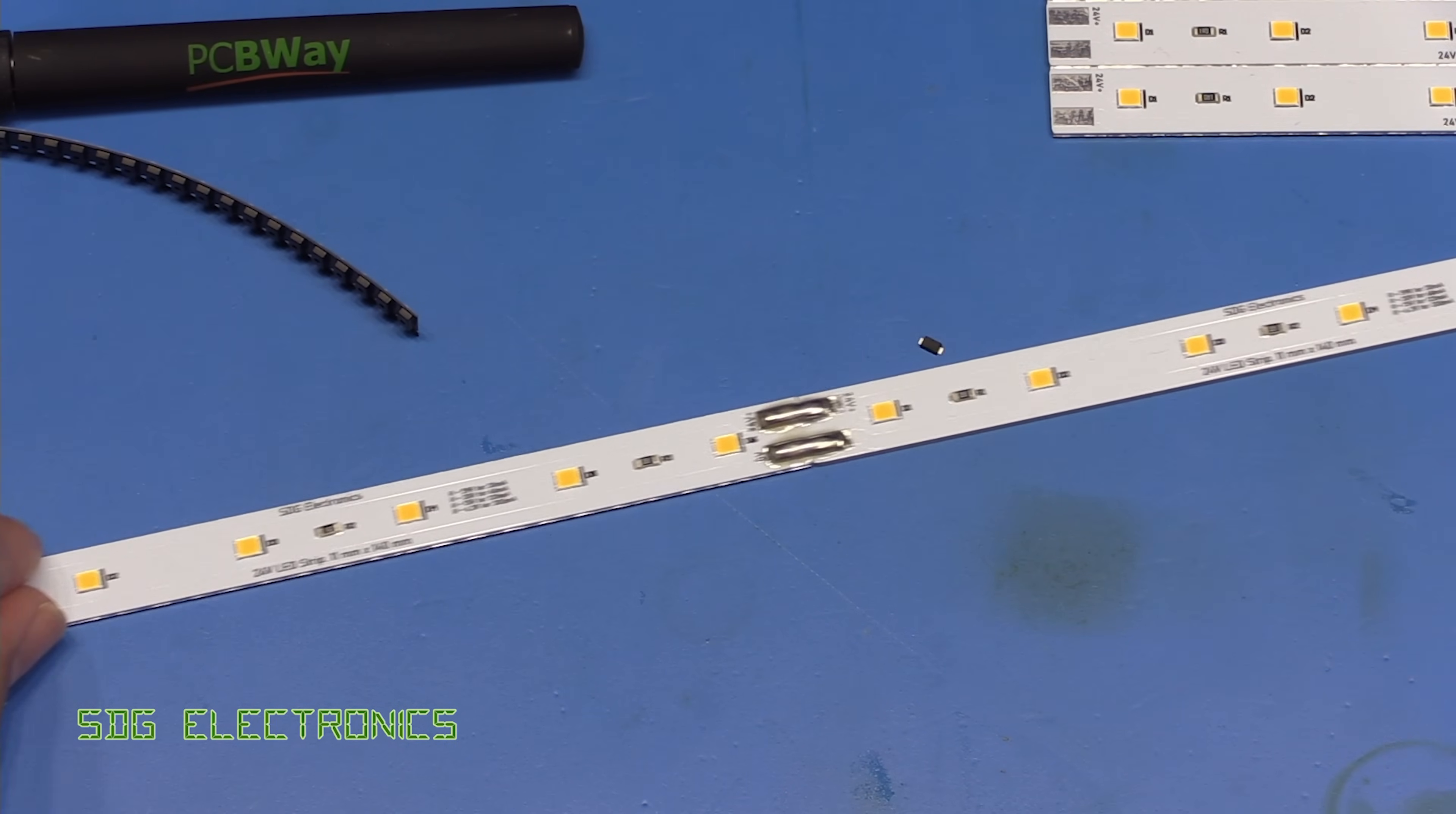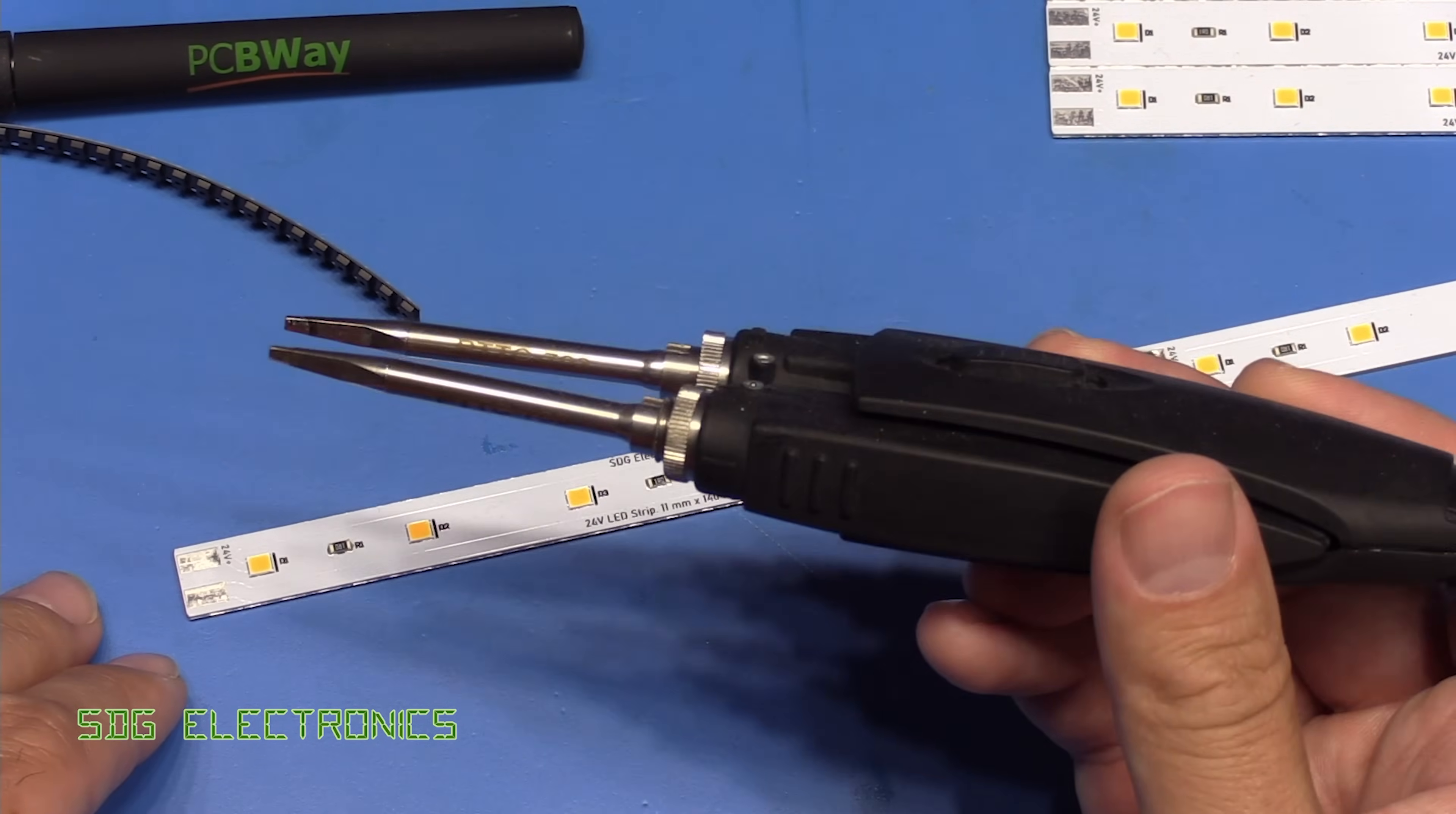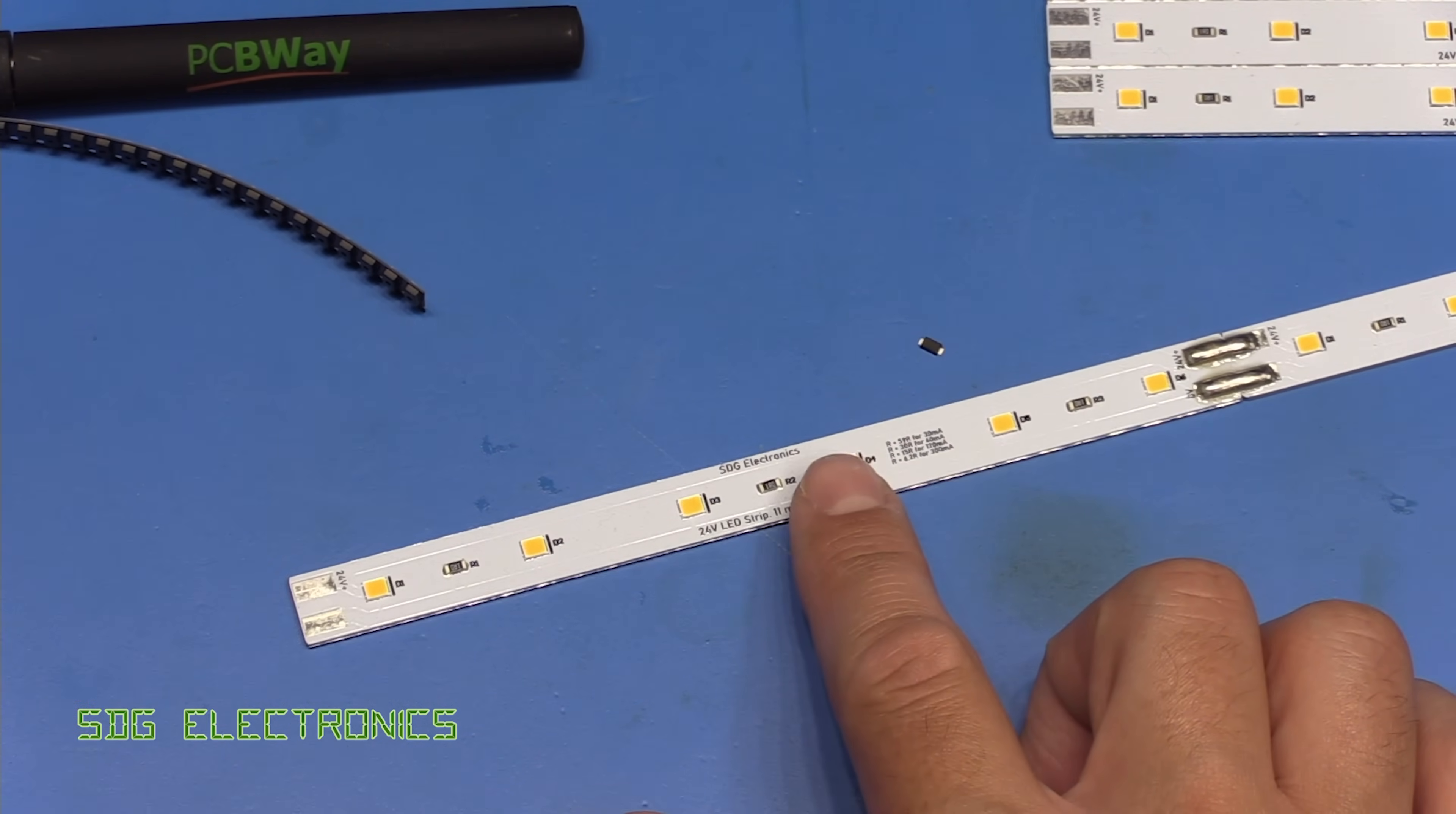So we've got our LED strip here that we're going to desolder two resistors from. We'll go for the one right in the middle on each of these boards and we've got our Metcal PTZ tweezers so this should do the job but bear in mind we've got an aluminium PCB so this is going to be trying to sink all the heat away from our soldering iron.